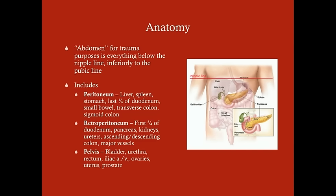For our purposes in trauma, the abdomen is everything below the nipple line down to the pubic line. The peritoneum includes the liver, spleen, stomach, the last quarter of the duodenum, the small bowel (jejunum and ileum), the transverse colon, and the sigmoid colon. The retroperitoneum includes the last three-quarters of the duodenum, pancreas, kidneys, ureters, ascending and descending colon, and major vessels. The pelvis includes the bladder, urethra, rectum, iliac arteries and veins, and reproductive organs.